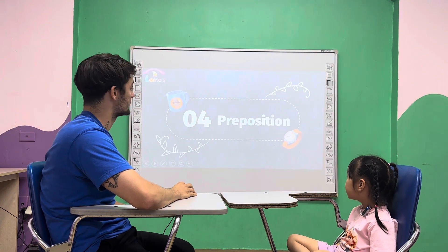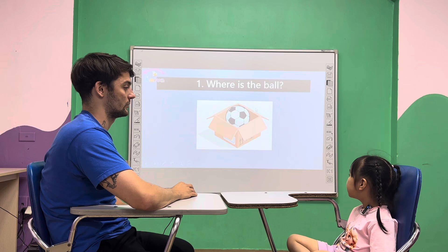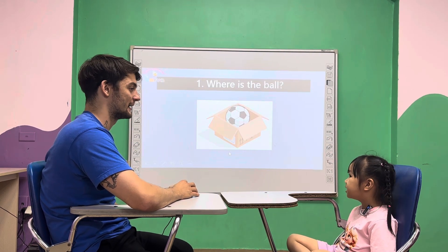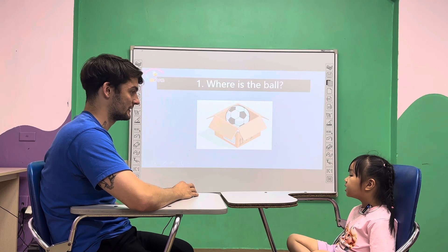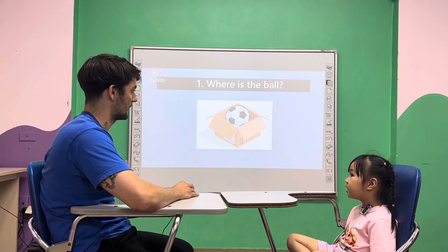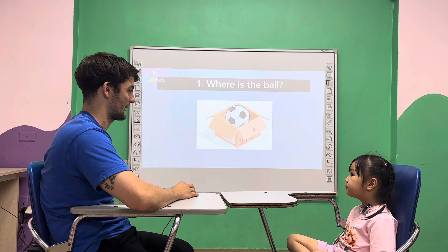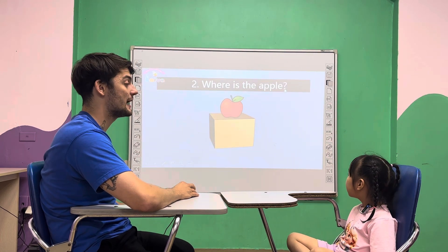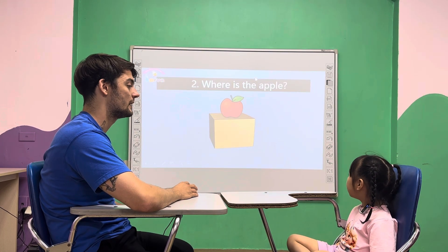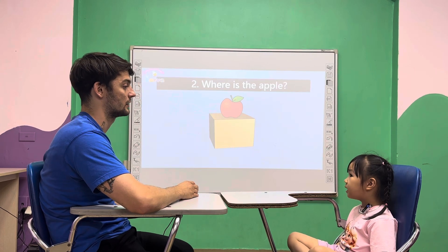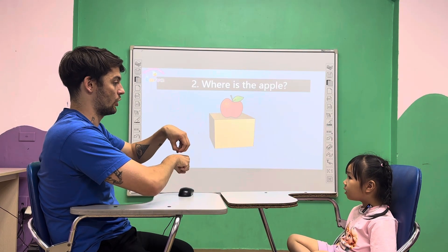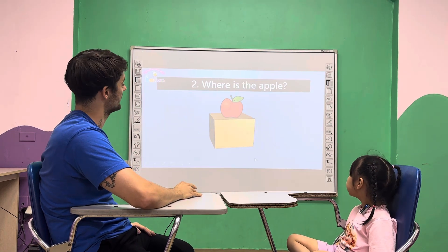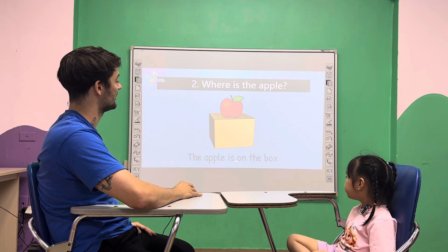Let's talk about prepositions, okay. Where is the ball? The ball is in — in. What's this? Box. The ball is in the box. Correct. Where is the apple? The apple is on the box. The apple is on the box.